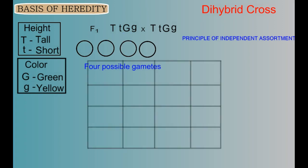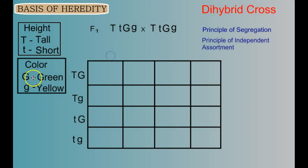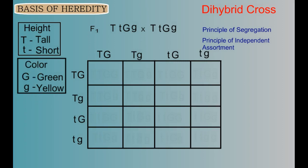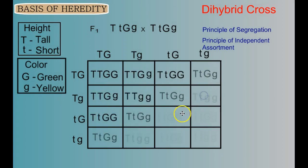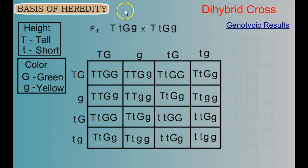This means we can make each of four possible gametes: TG, Tg, tG, and tg. Now we're ready to set up our Punnett square. The principle of segregation says we segregate T's from each other and G's from each other, and the principle of independent assortment shows we can also make the recombined combinations. We get the same four gametes across the top and down the side. Stop the video here and fill out your own Punnett square.